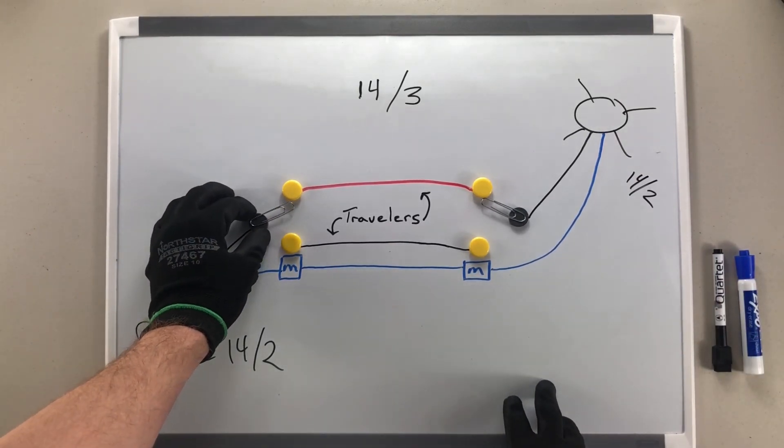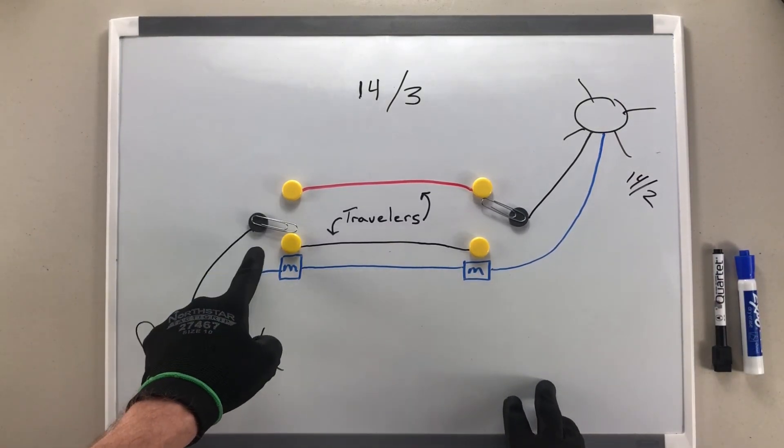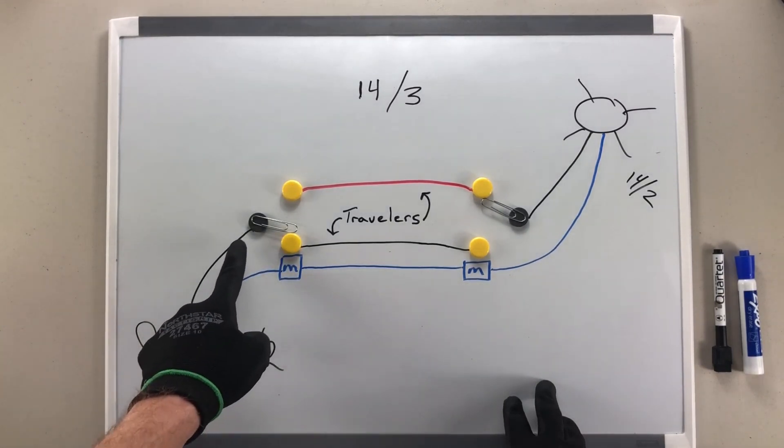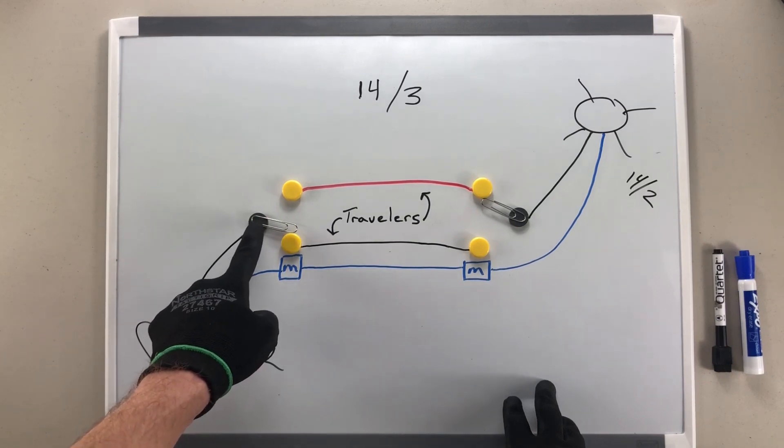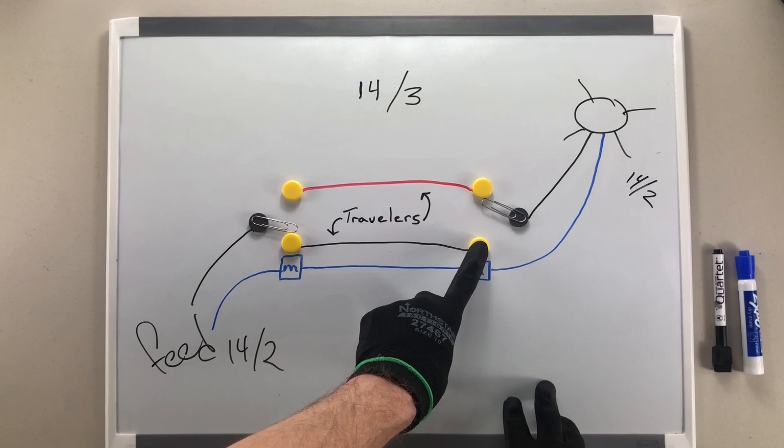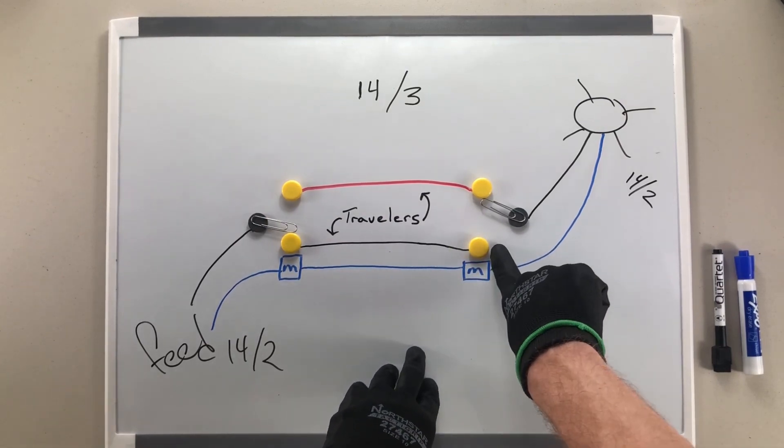Anytime we hit one of our three-way switches, it changes the condition of our common screw connection. Our power is now coming in across our common screw to this traveler, across, and the light is in an off condition because the power stops right here.